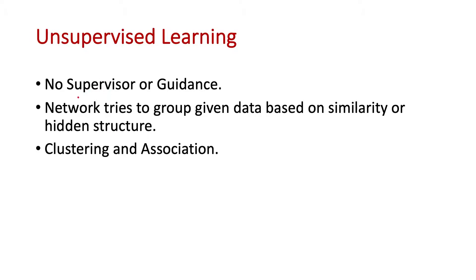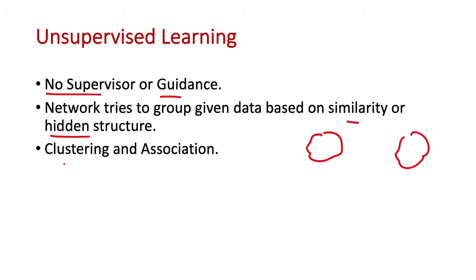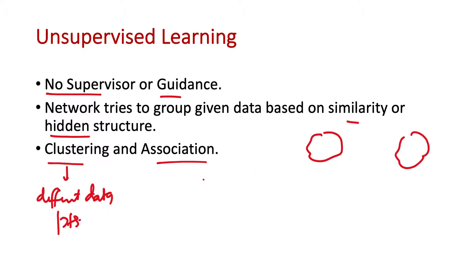In unsupervised learning there is no supervisor or guidance. The network just tries to group the given data based on similarity, or tries to understand the hidden structure in the data — finding which data points are similar and which are different, and ultimately grouping similar data together. The main classes of unsupervised learning are clustering and association. Clustering groups different data points together, whereas association tries to find some relation between different parameters.